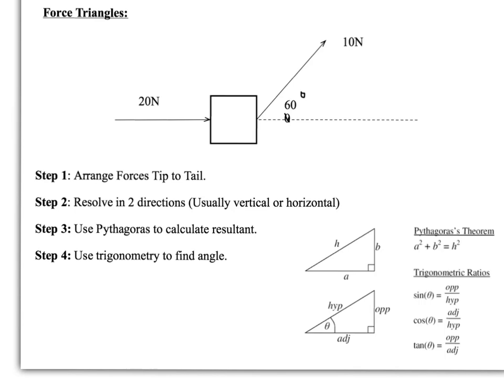You can make right angle triangles or you can use the cosine and sine rules. I'm going to look at the force triangles method first. To make right angle force triangles, first arrange your forces tip to tail to construct a force triangle, then resolve in two directions, usually vertical or horizontal. Then use Pythagoras to calculate the resultant and finally use trigonometry to find the angle. The summaries of the Pythagoras and trigonometric rules are on this slide.